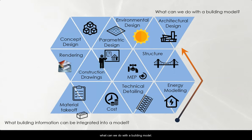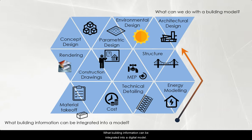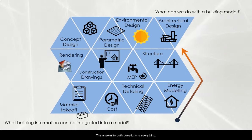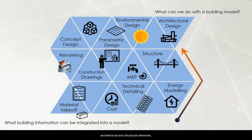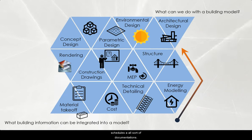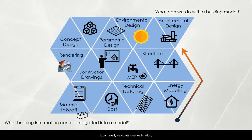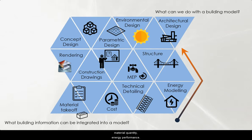Here are two important questions: what can we do with a building model, and what building information can be integrated into a digital model? The answer to both questions is: everything. A BIM model includes a detailed 3D model with all architectural and structural elements, mechanical and electrical systems, spaces, details, schedules and all sorts of documentation. It can easily calculate cost estimation, material quantities, energy performance, and more.